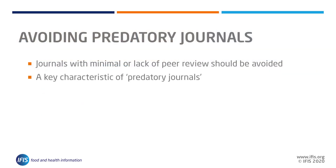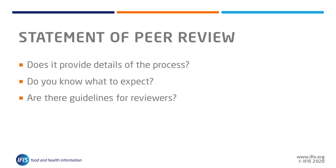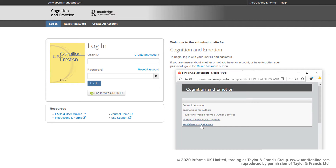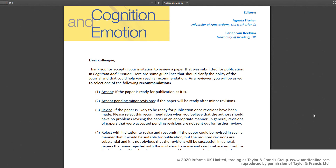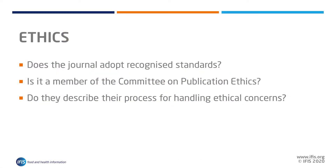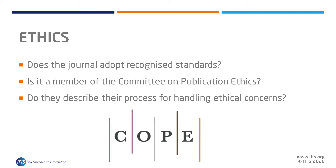Does the journal have a statement or description of their peer review process? Does it provide details of this process or information on who is responsible for handling the paper at each stage, such as associate or section editors? Are any guidelines for reviewers posted to the website — a document describing what the journal expects of its reviewers or a description of the journal's peer review process? Is there an ethical statement declaring that the journal has adopted, endorses, and encourages its reviewers to adhere to the Committee on Publication Ethics guidelines for reviewers, one of the foremost authorities on publication ethics?